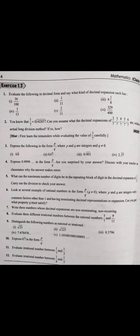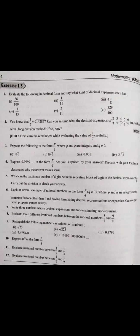Decimal expansion is of two types: one is terminating and the second type is non-terminating. Terminating decimal expansion is when dividing gives remainder 0. Non-terminating decimal expansion is when remainder is not zero. Non-terminating decimal expansion is further of two types: first is non-terminating repeating, and second is non-terminating non-repeating.